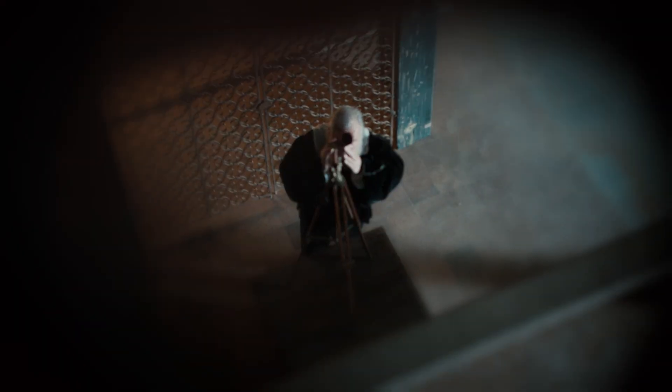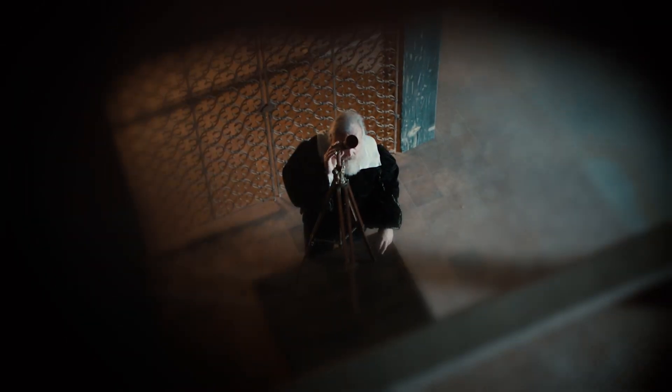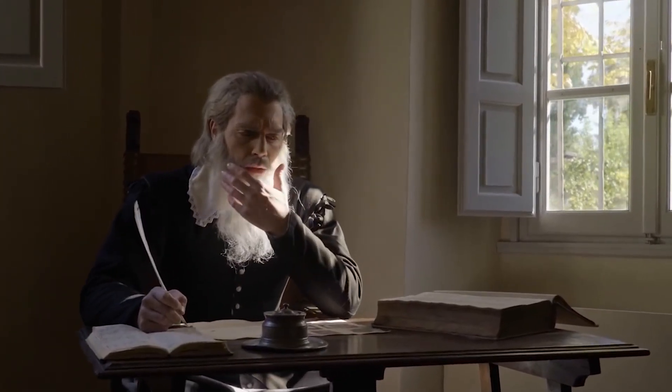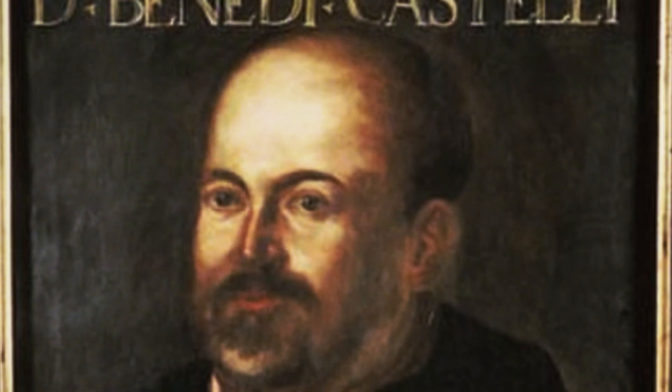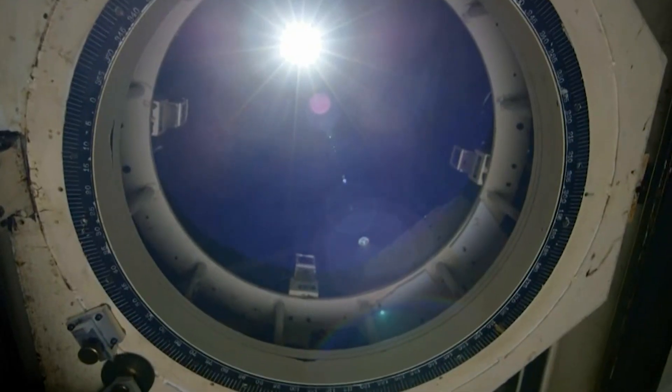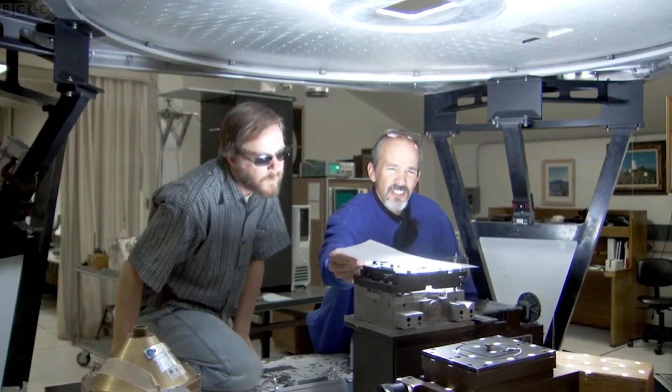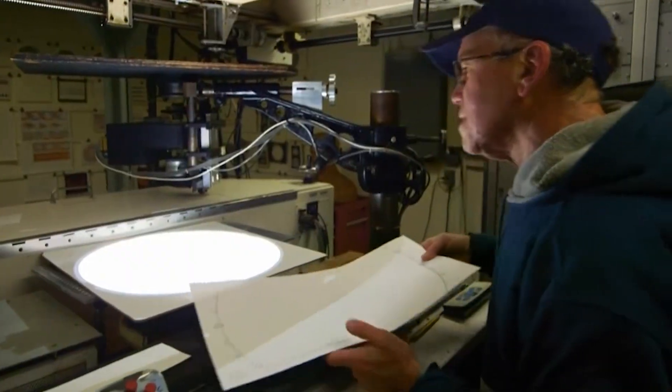Serious research on the Sun began in the early 17th century, with two great Italian astronomers, Galileo Galilei and Benedetto Castelli. They positioned a telescope in front of a sheet of paper and examined the projected image. Even today, this remains the simplest method for observing the Sun and is still used by many amateur astronomers.